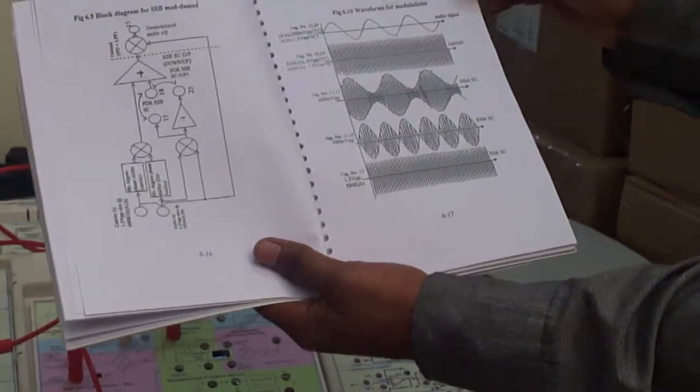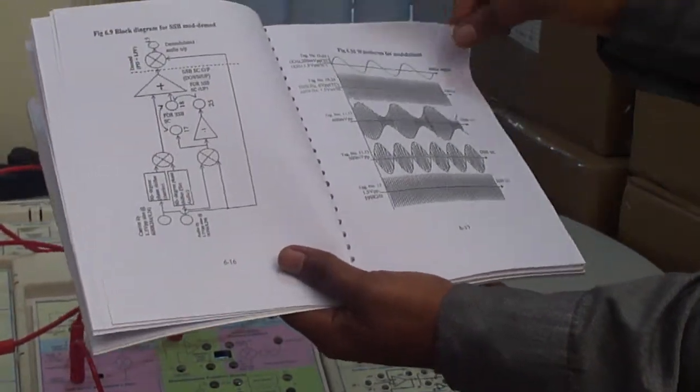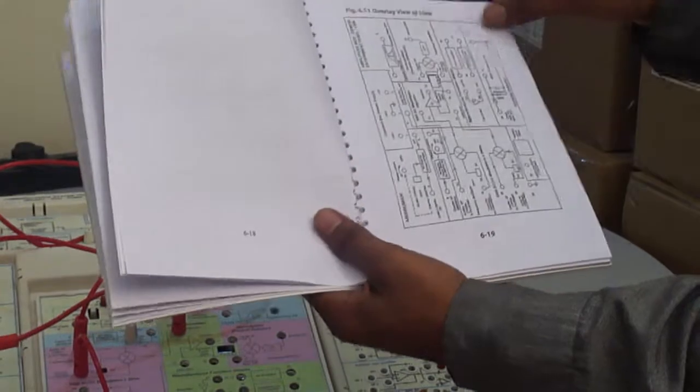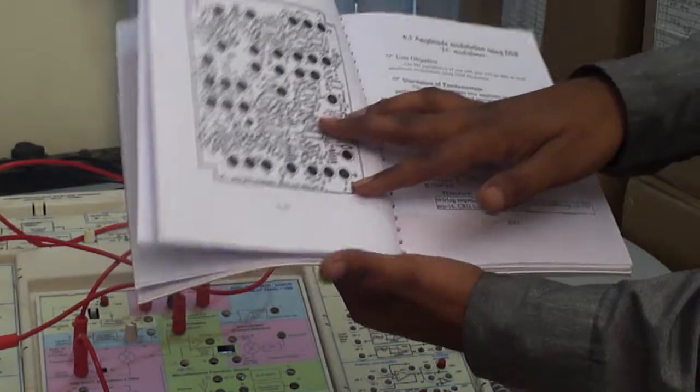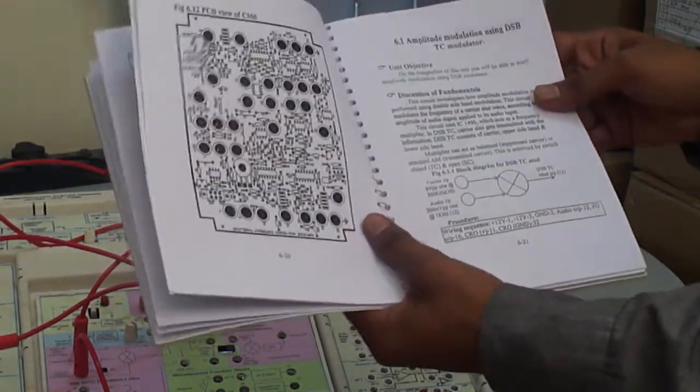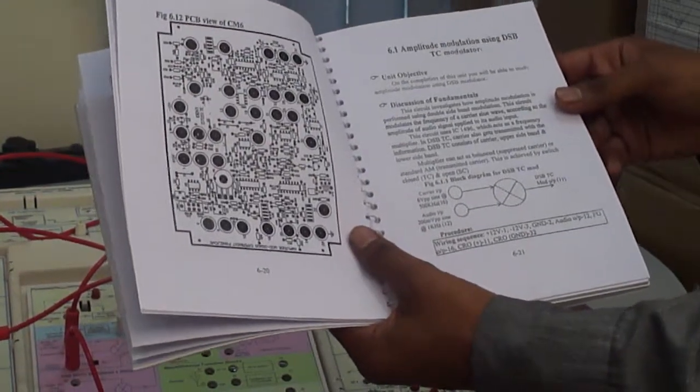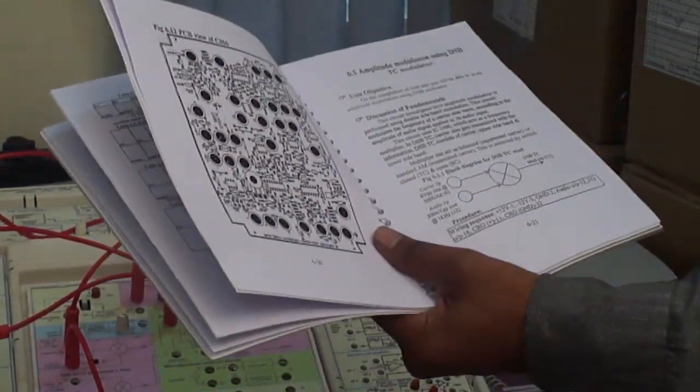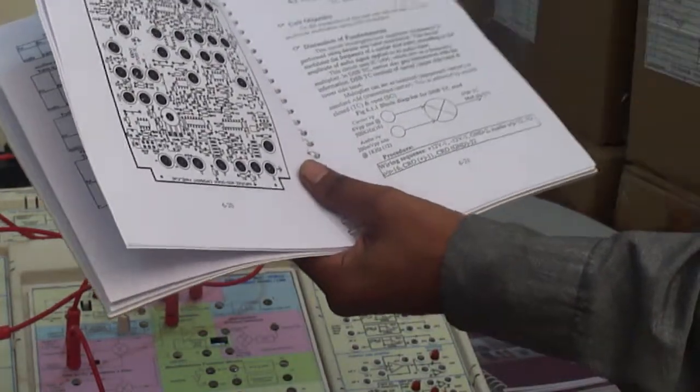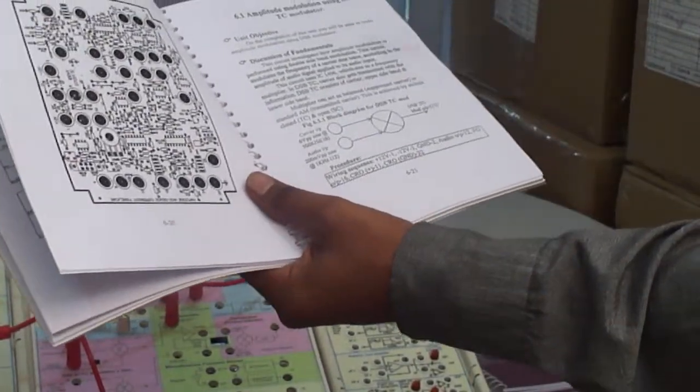All the waveforms are given for modulation and demodulation section. The first experiment is amplitude modulation using DSB-TC modulator. We have performed there. Here is the description of fundamentals.